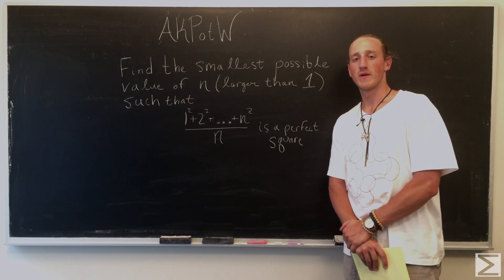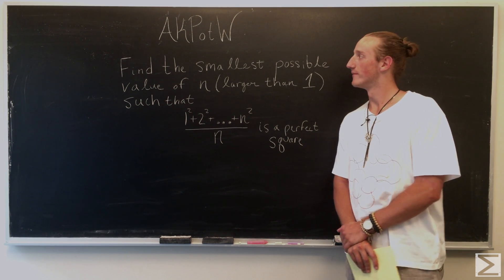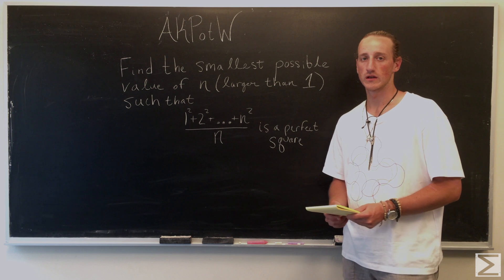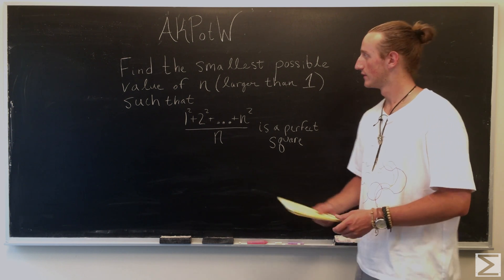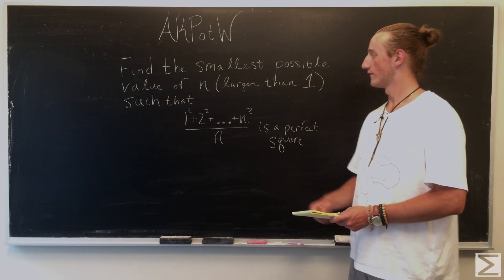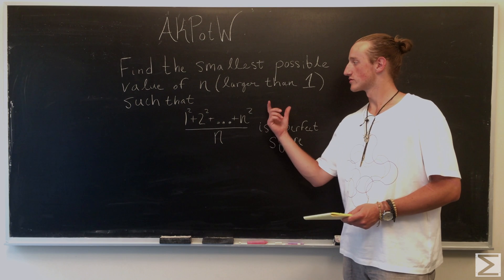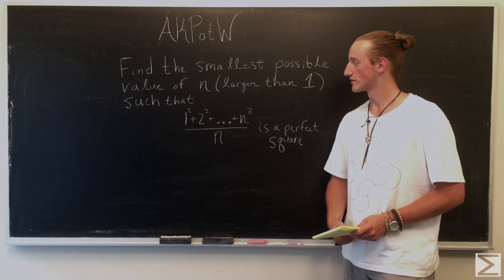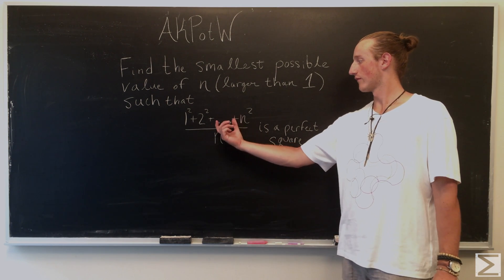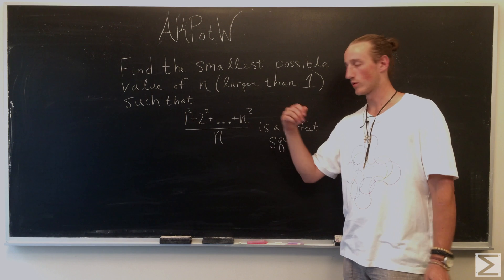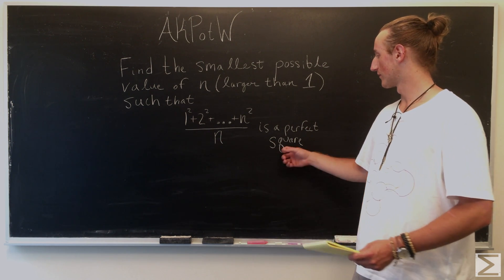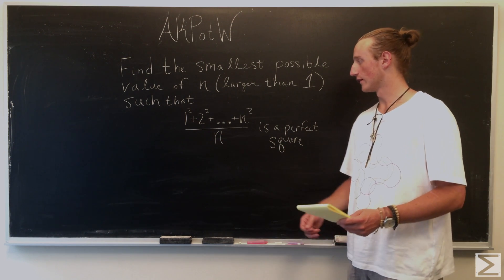Hi, welcome to the World Wide Center of Math. Today in our series Advanced Knowledge Problem of the Week, we're looking to find the smallest possible value of n, which is larger than 1, such that 1 squared plus 2 squared plus everything up to n squared, all over n, is going to give us a perfect square.